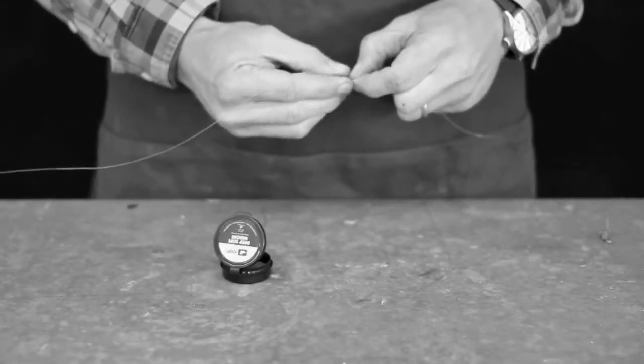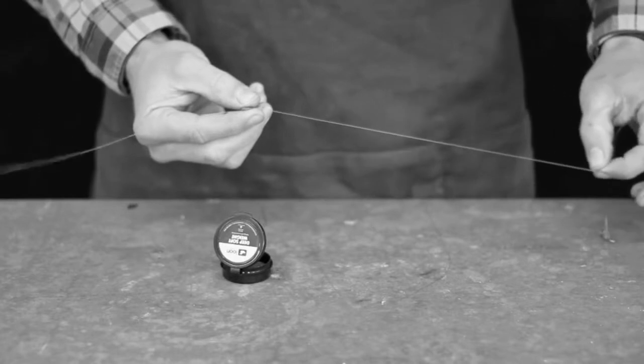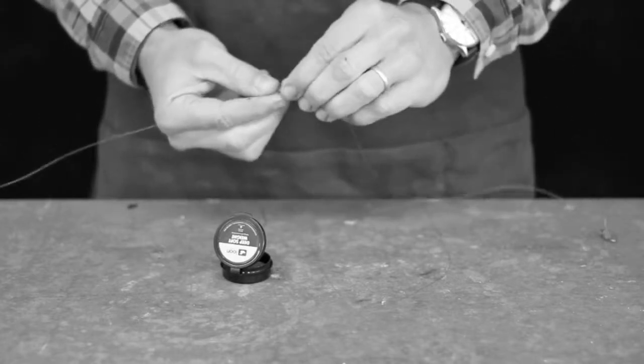Loon Softweights are easily adjusted as conditions vary by changing the size of the weight or moving it up and down the leader to adjust a fly's depth.